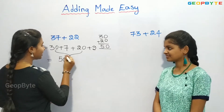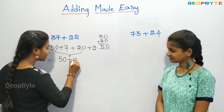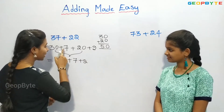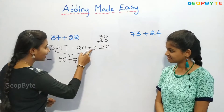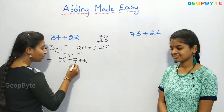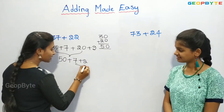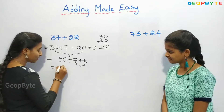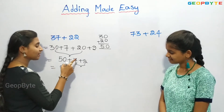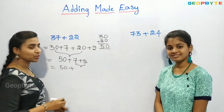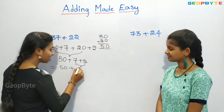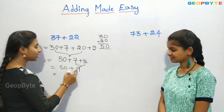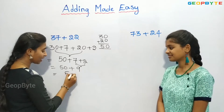Let us write the remaining numbers as they are: plus 7 plus 2. Now let us add these two unit digits. 7 plus 2 is 9. So 50 plus 9 is 59.